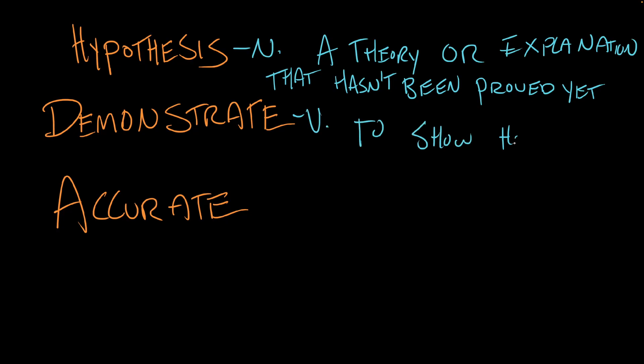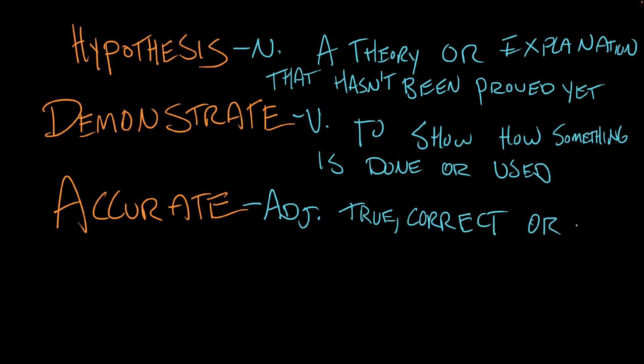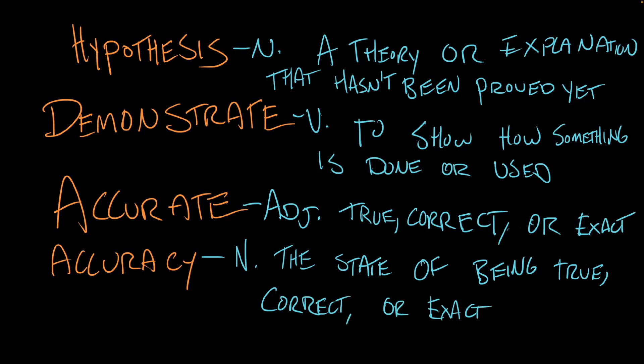Demonstrate is a verb and it means to show how something is done or used. Accurate is an adjective and it means true, correct, or exact. The noun form accuracy is the state of being true, correct, or exact.